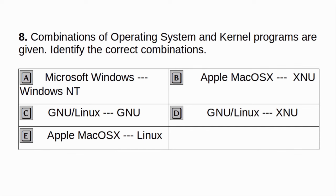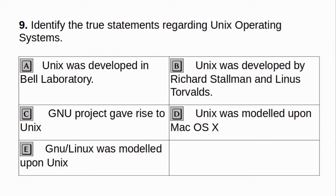Combinations of operating system and kernel programs are given. Identify the correct combinations. a. Microsoft Windows - Windows NT. b. Apple Mac OS X - XNU. c. GNU Linux - GNU. d. GNU Linux - XNU. e. Apple Mac OS X - Linux. Answer: a and b.